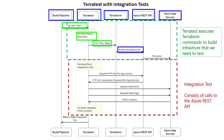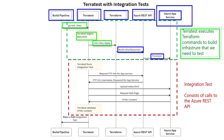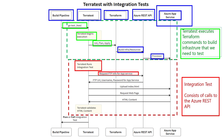This is all part of the normal process of Terraform to provision resources. What comes next is the actual integration test. We're going to call into the Azure REST API to get what we need to execute on that integration test. The integration test automatically kicks off, where we call into that REST API and request information about the app service.